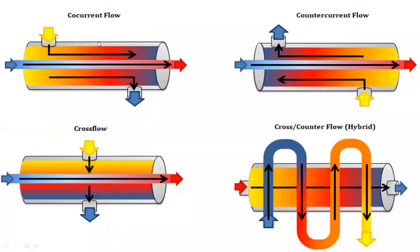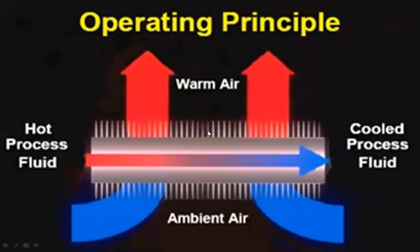There are different flow configurations. In co-current flow, both fluids — tube side and shell side — flow in the same direction. In counter-current flow, the shell side fluid flows opposite to the tube side flow. In cross flow, the tube side goes in one direction and the shell side comes perpendicular. Finally, cross and counter combined flow is called hybrid flow, where the shell side fluid goes one way and the tube side fluid goes both up and down.